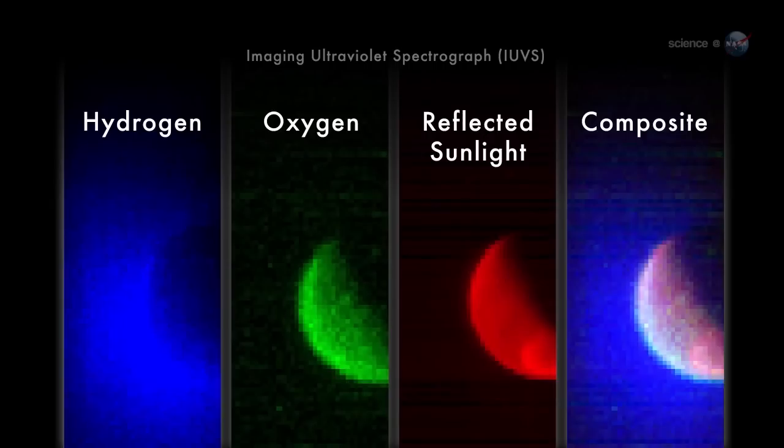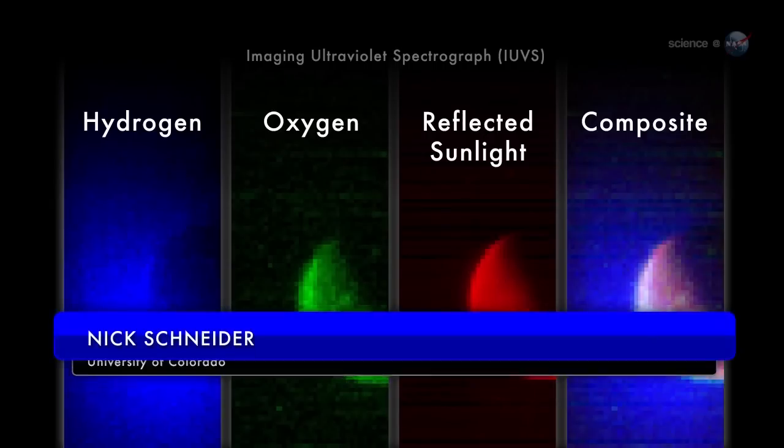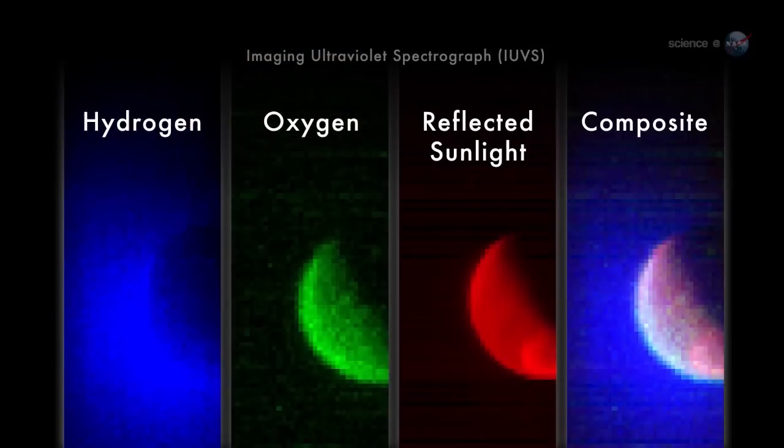Our imaging ultraviolet spectrograph, IUVS, obtained these false-color images of Mars on September 22, says Nick Schneider, who leads the instrument team at the University of Colorado. They trace the distribution of hydrogen and oxygen in the Martian atmosphere.